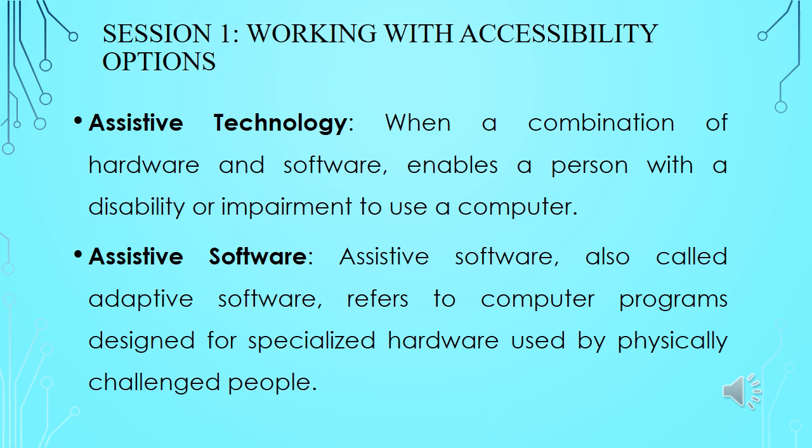Assistive Technology: when a combination of hardware and software enables a person with a disability or impairment to use a computer. Assistive Software, also called adaptive software, refers to computer programs designed for specialized hardware used by physically challenged people. These softwares are helpful for people who have a disability. In this video I will focus on assistive software.